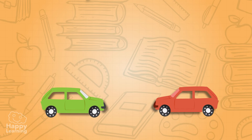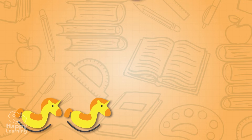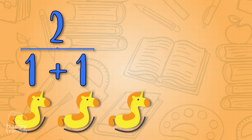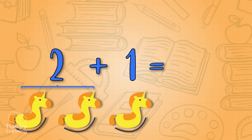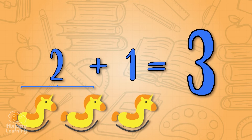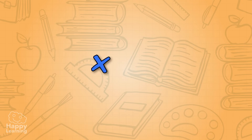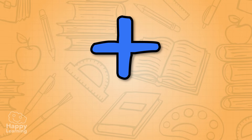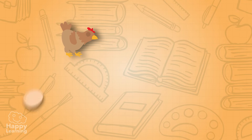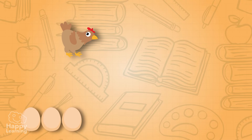Adding is joining things and counting them — it's that simple. For example, let's add how many toys we have: one plus one, two plus one, three. We have three toys. Easy peasy! As you can see, we use this sign when we are adding and it's called plus.